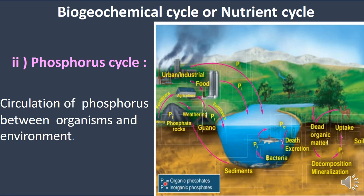Inorganic phosphates reach water bodies through rainwater. Organisms then use these phosphates: first, plants absorb phosphate ions from the soil, then herbivores consume the plants, passing phosphorus through trophic levels as organic phosphates. Next, through the decomposition process, dead organic matter is broken down.